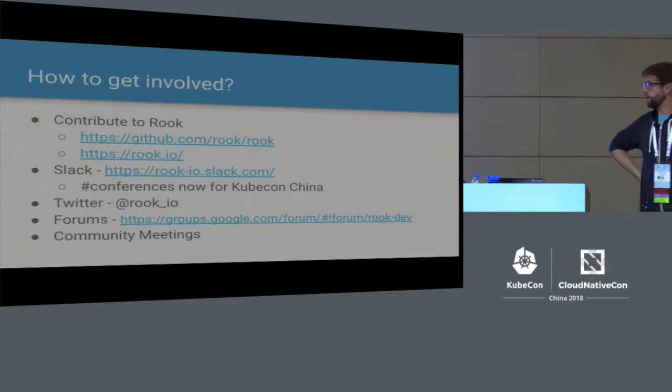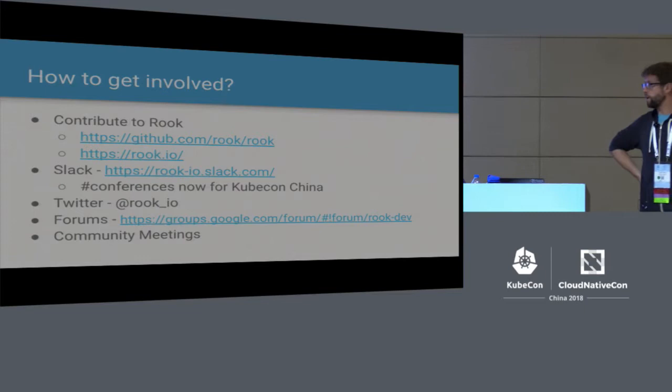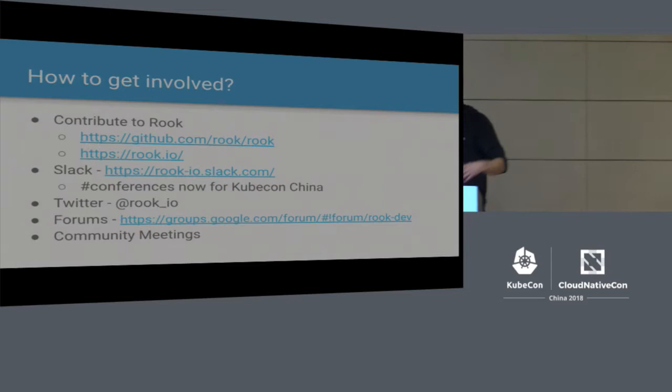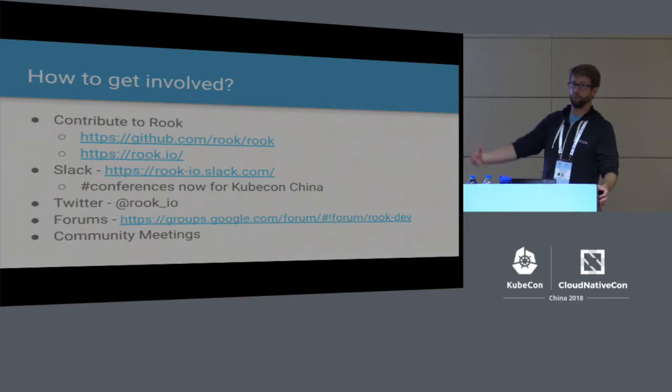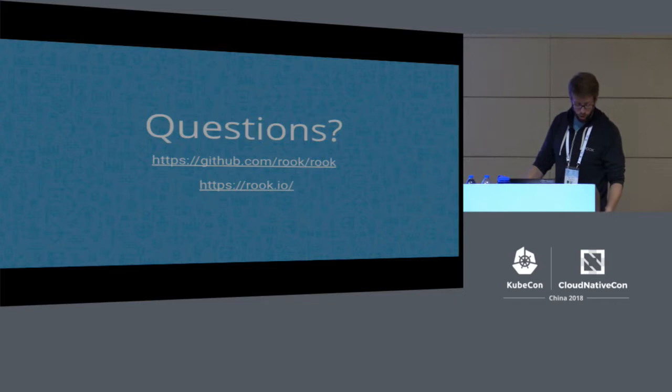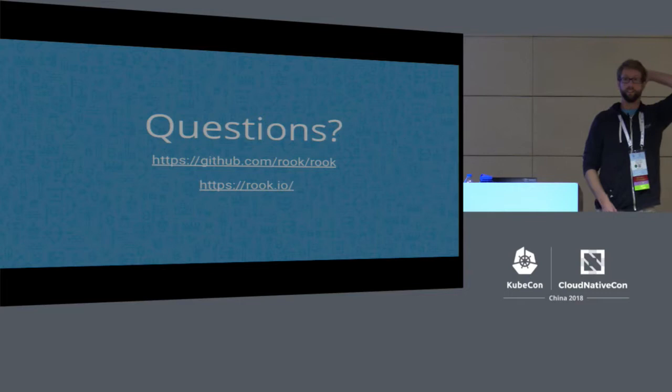How to get involved: Rook is an open source project hosted by the CNCF. We have just over a hundred different contributors — people who have written code for the project — and we're always taking new contributors to write code, use the project, open GitHub issues, or give us feedback. The more we can build that community, the happier we are. You can find us on Slack, Twitter, the forums, and we have community meetings as well. We've got about seven minutes for questions.